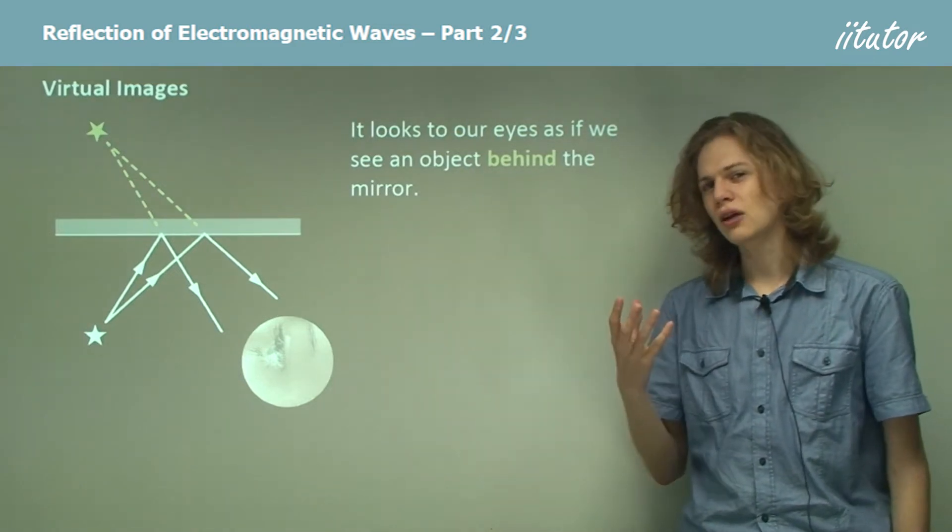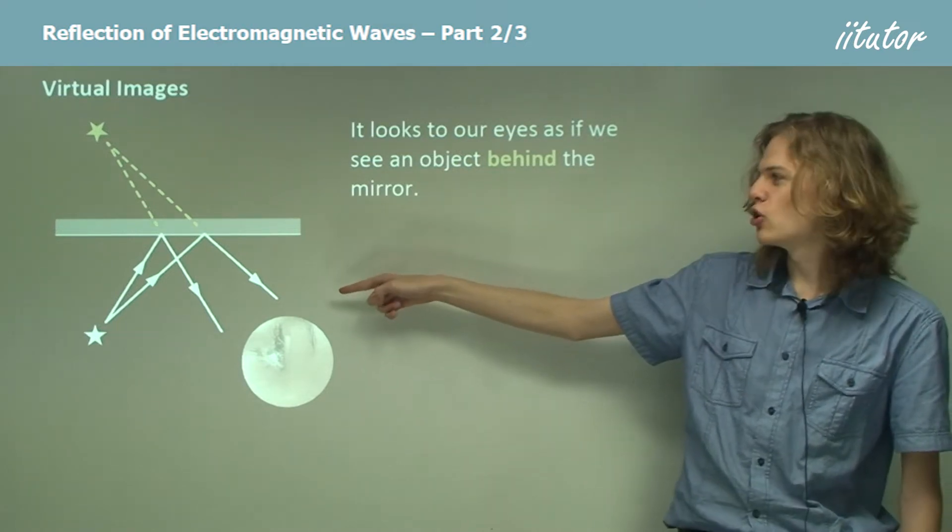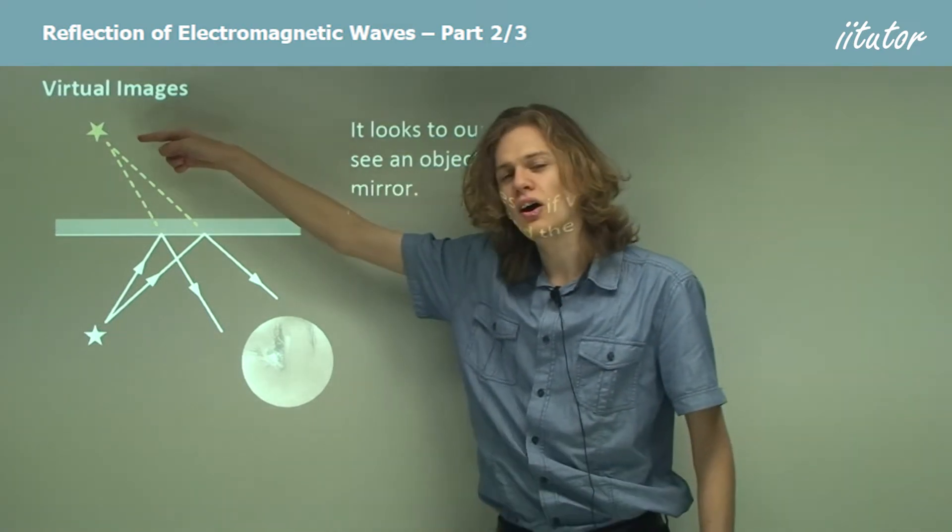But our brain doesn't perceive light like that. It assumes that the light must be traveling in a straight line, and then it must be coming from an object over here behind the mirror.